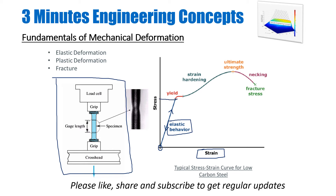Once the stress reaches the yield strength of the material, this is the onset of plastic deformation — or permanent deformation. During this permanent deformation, stresses still rise due to strain hardening. If I stop somewhere in the middle of plastic deformation and unload the sample, there will always be some permanent deformation remaining in the material, which I call epsilon B.